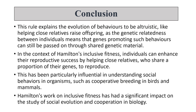W.D. Hamilton gave us the theory of inclusive fitness, Hamilton's rule, and kin selection — expressed as RB greater than C. This has had a significant impact on the study of social evolution and cooperation in biology. We can say that by helping others, an animal actually increases its own fitness and reproductive success. With Hamilton's work, we can know and present this fact mathematically. This is the idea of altruism and reciprocal altruism. Hope you have understood the concepts. Thank you.